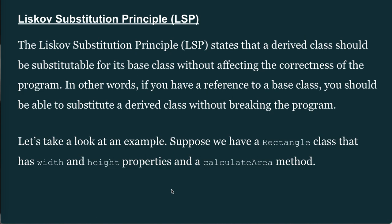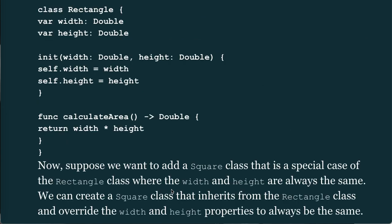For example, suppose we have a Rectangle class with width and height properties and a calculateArea method: class Rectangle { var width: Double; var height: Double; init(width: Double, height: Double) { self.width = width; self.height = height }; func calculateArea() -> Double { return width * height } }.